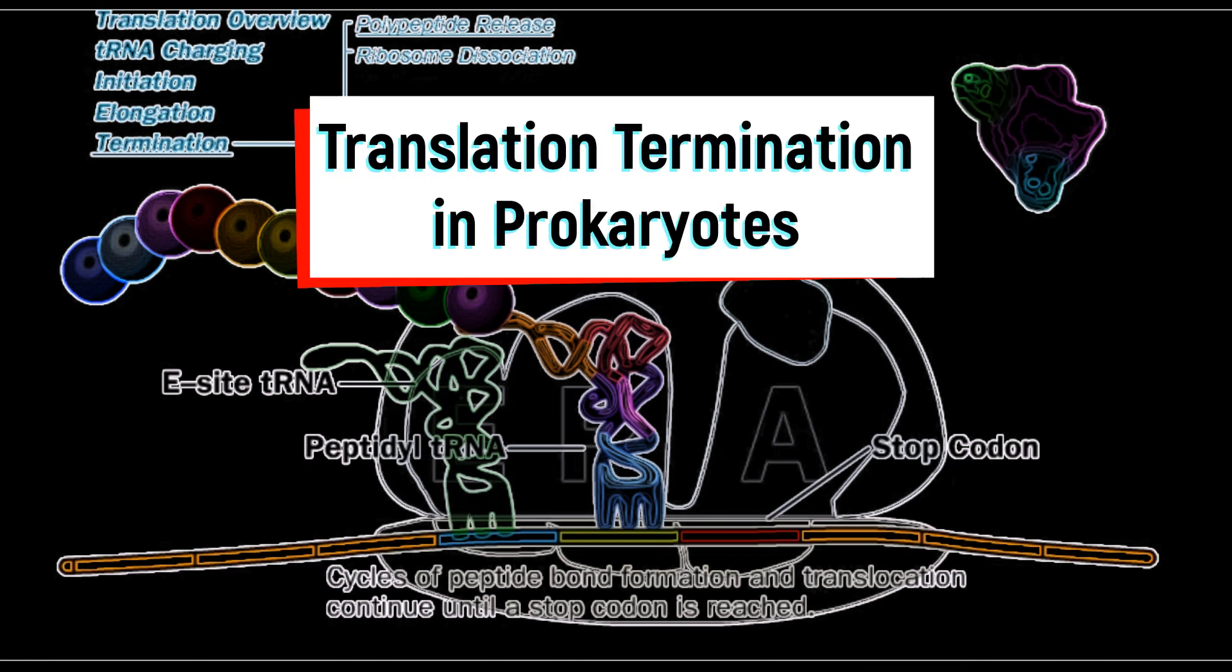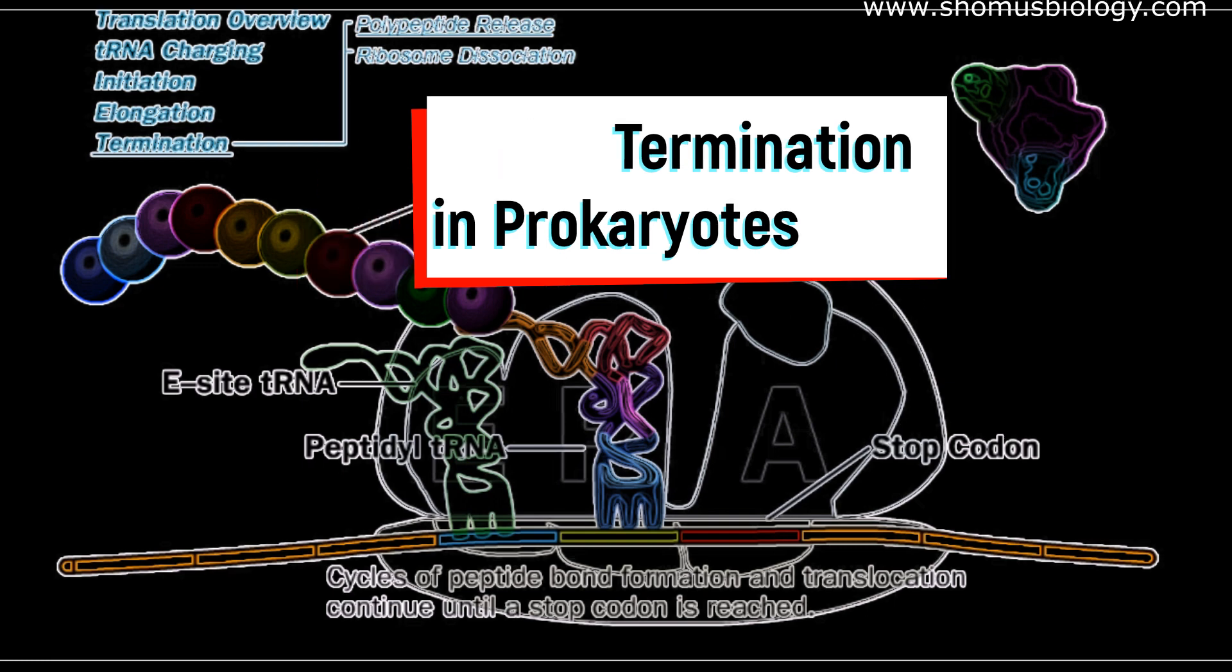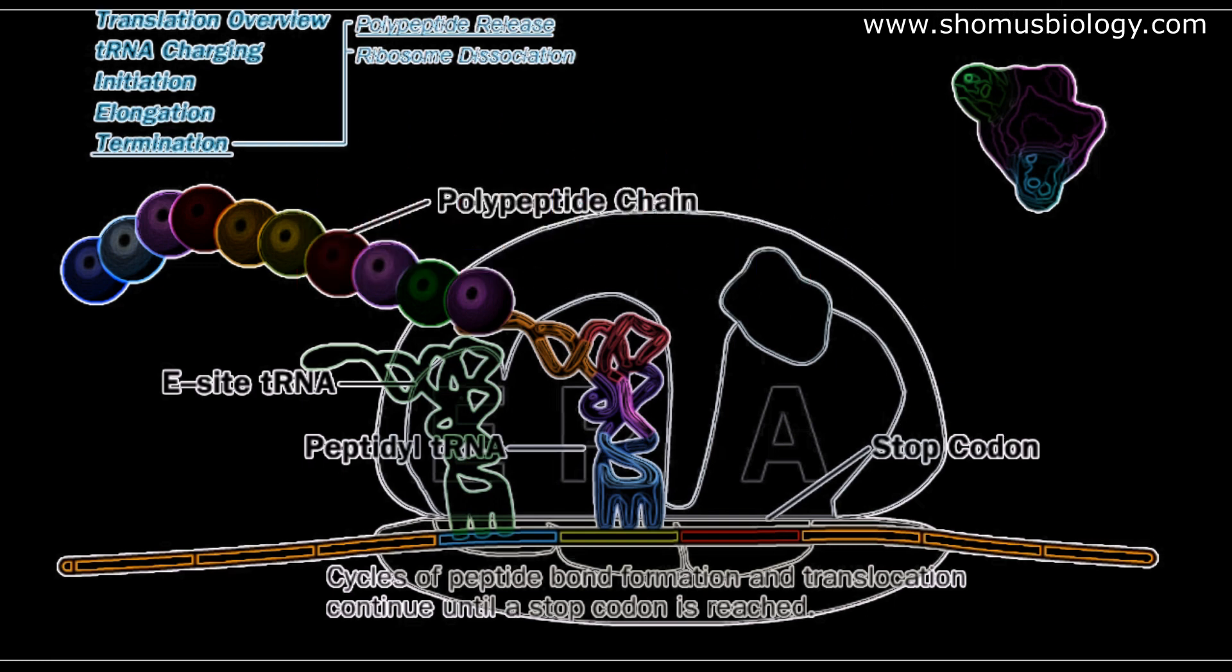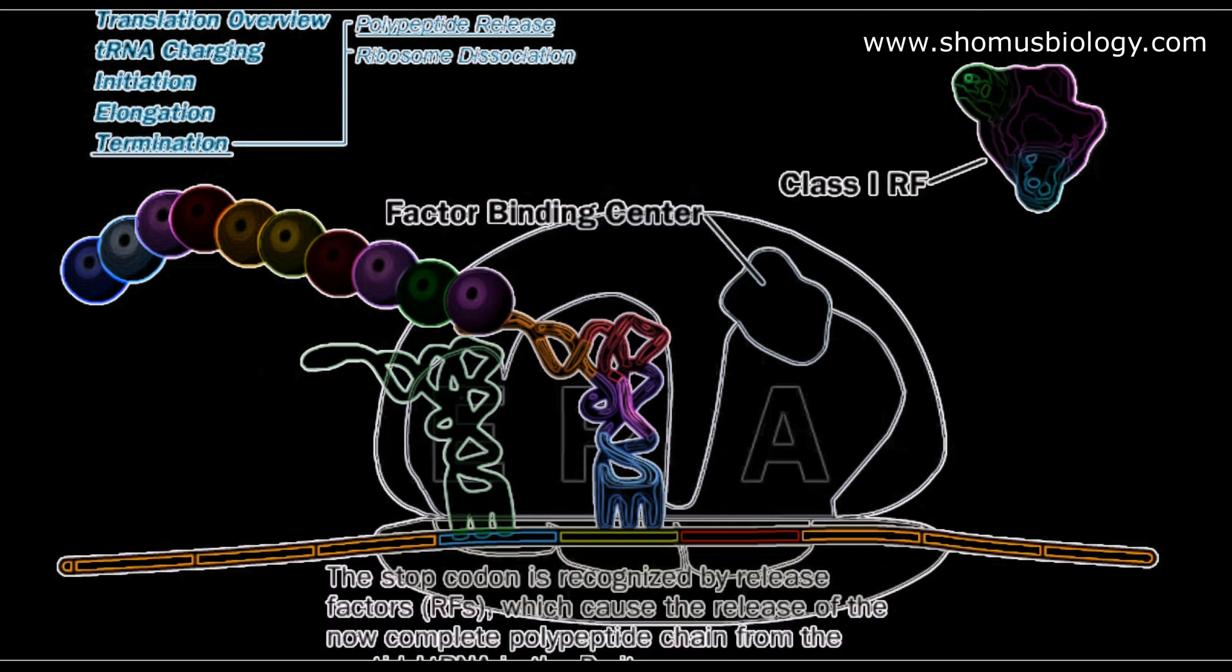Now let's talk about the termination of prokaryotic protein synthesis. We have polypeptide release and then ribosome dissociation. This process continues when there is a stop codon, and we have a release factor known as class 1 release factor.